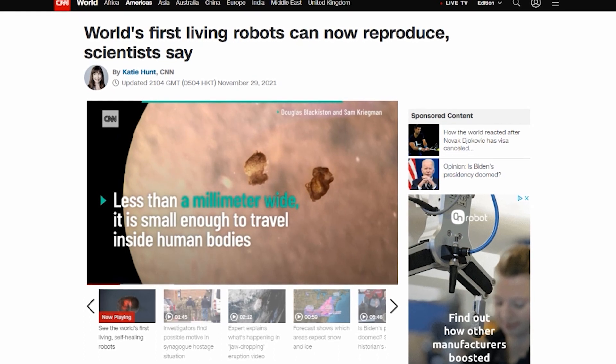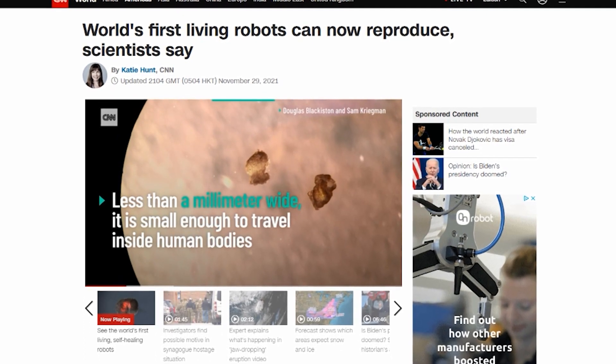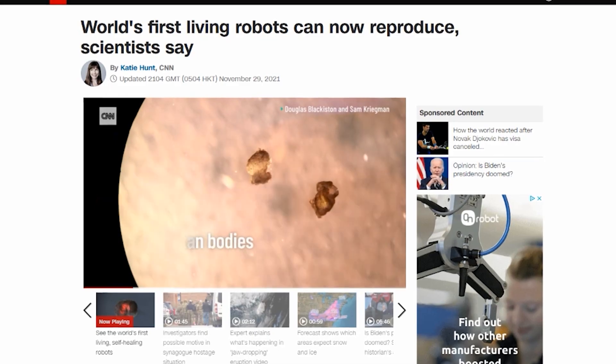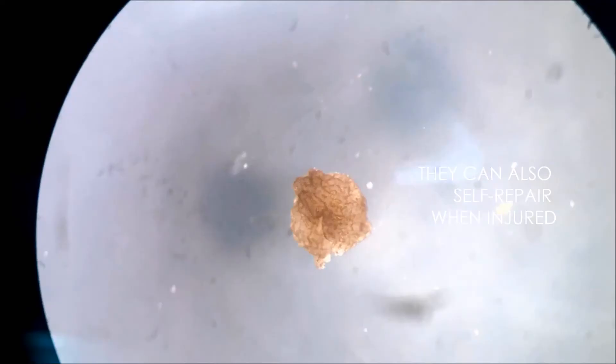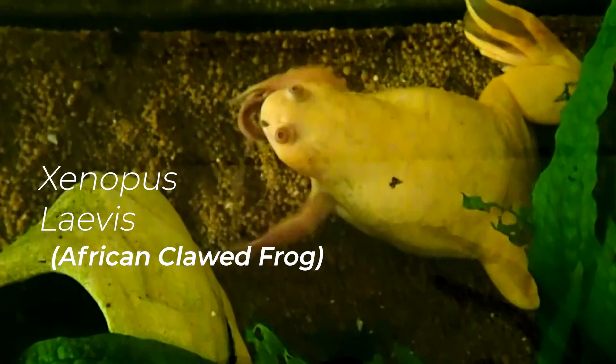On November 29th CNN reported that scientists at the University of Vermont had claimed the world's first living robots were now able to reproduce. The so-called xenobots were synthetic organisms grown out of stem cells from frog eggs, specifically the Xenopus laevis, hence the name xenobots.